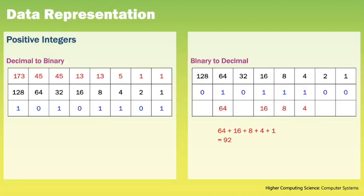From National 5 you should recall how we store positive whole numbers or integers in binary. Here on the left we have the process of converting from decimal to binary and on the right the process from binary to decimal. To figure out the range of numbers that can be stored within a set number of bits we use the formula 2 to the power n minus 1, where n is the number of bits being used. So if 8 bits are used, we can store 2 to the power 8 minus 1 numbers, which is 255.